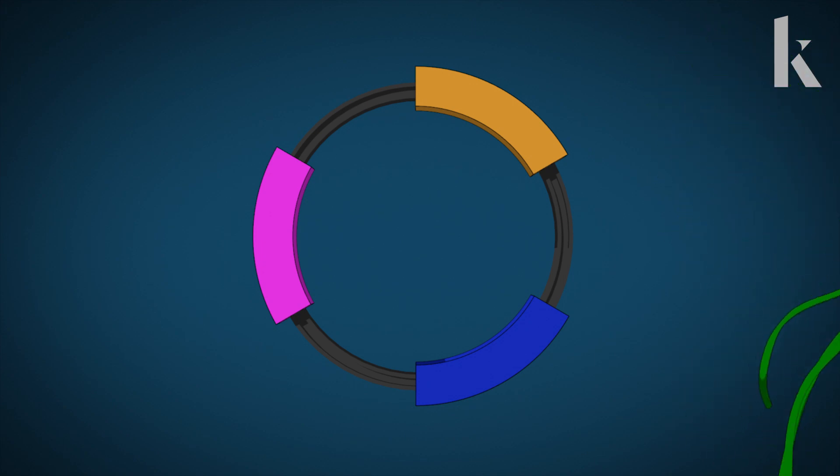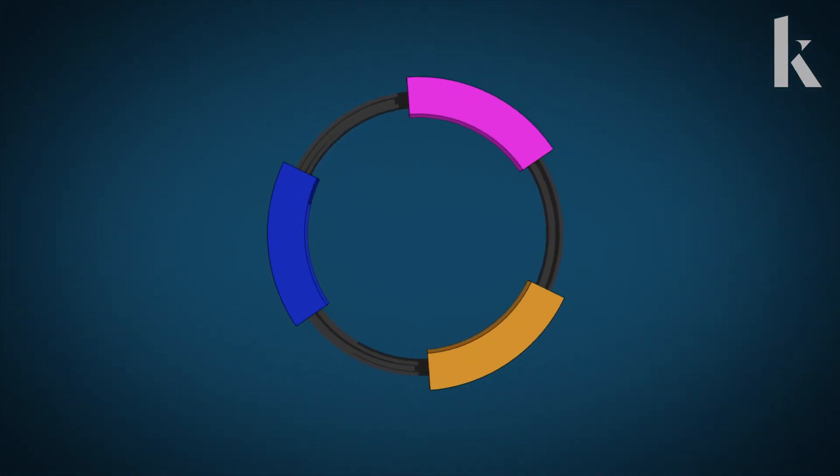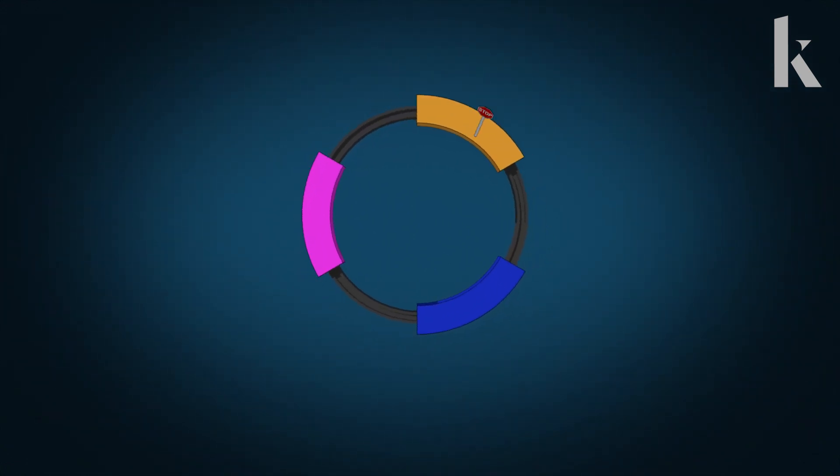The repressilator is a little loop of DNA with three genes. It works like rock, paper, scissors. Each gene generates a protein that turns off or represses the next gene, like paper covering and repressing rock.